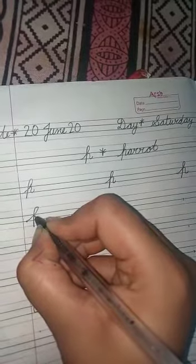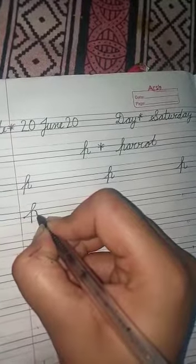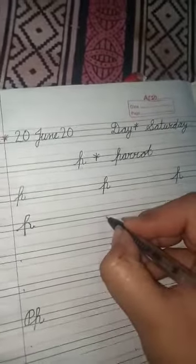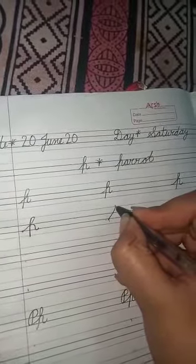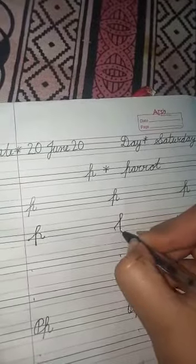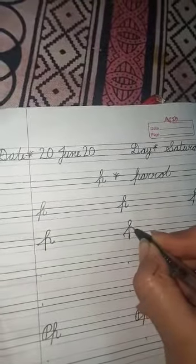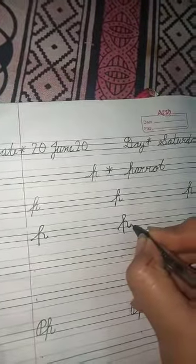Again go upper side like this way, turn and downside round shape. See, again start from third line, go upper side, fold like this. Make standing line, touch down side and go upper side again like this way, downside fold.